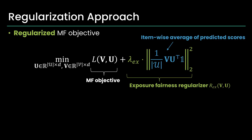In our method, we enhance the matrix factorization objective by incorporating the L2 norm of each item's average score as a regularization term, aiming to flexibly control exposure fairness.